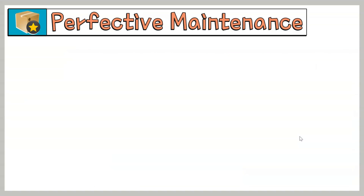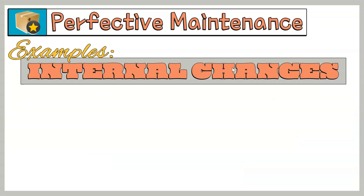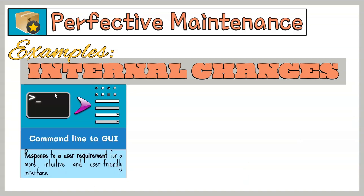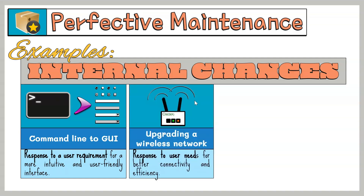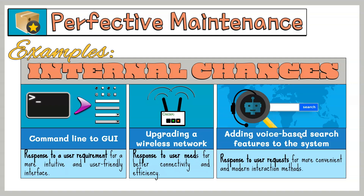Here are some examples of internal changes. First, converting a command line system to a graphical user interface — a response to a user requirement for a more intuitive and user-friendly interface. Second, upgrading a wireless network, which responds to user needs for better connectivity and efficiency. Third, adding voice-based search features to the system, which addresses user requests for more convenient and modern interaction methods.